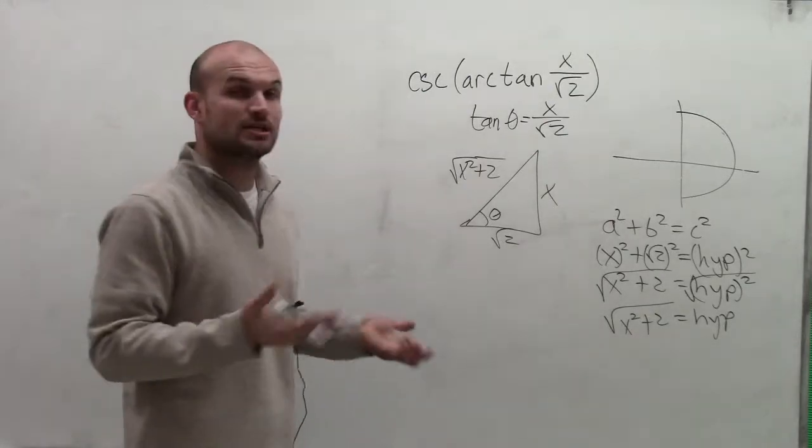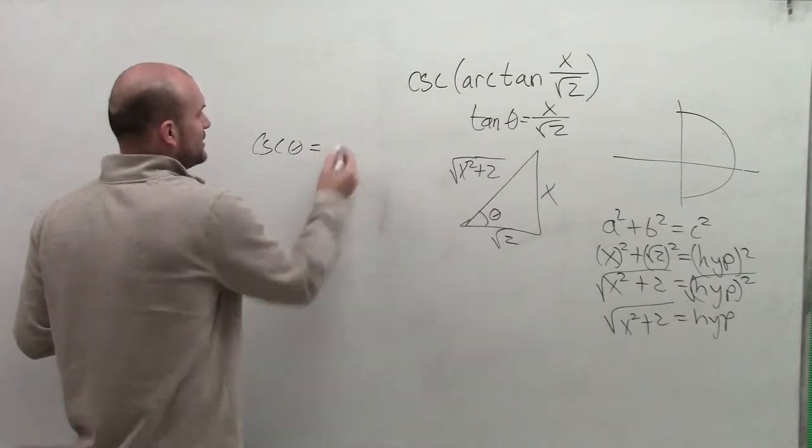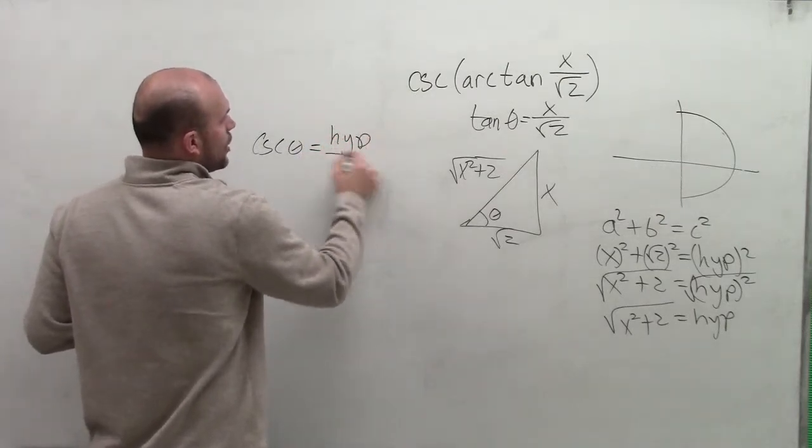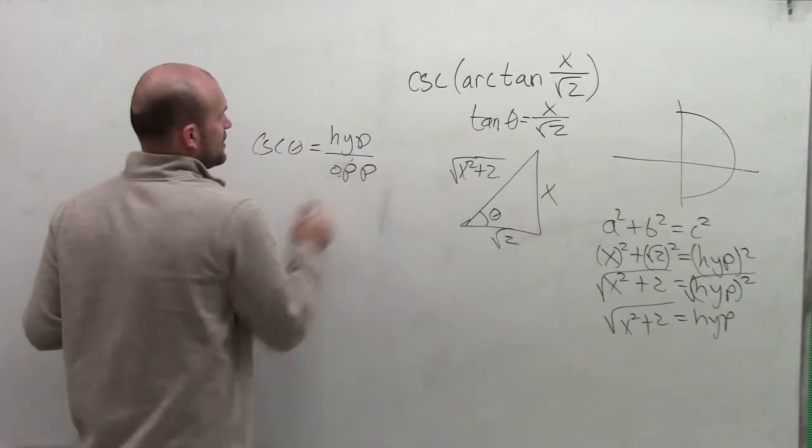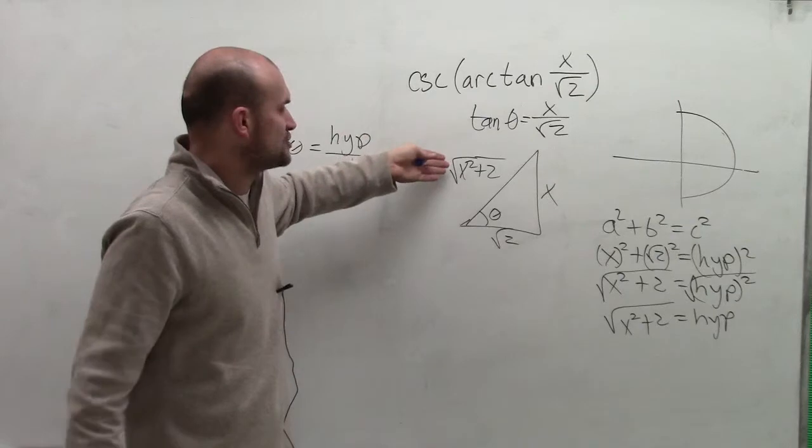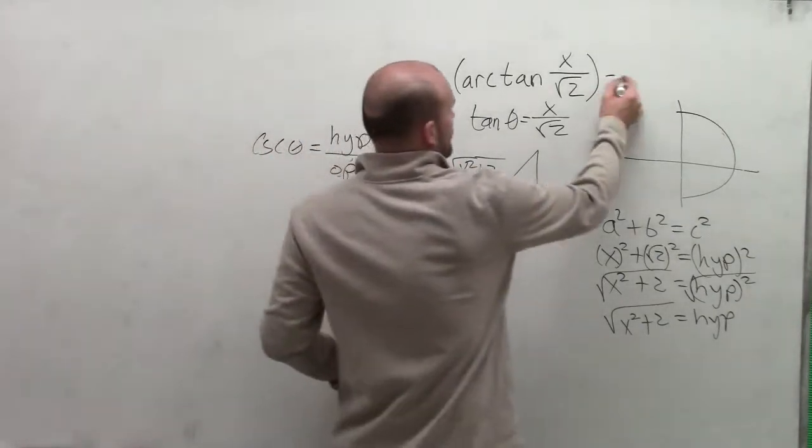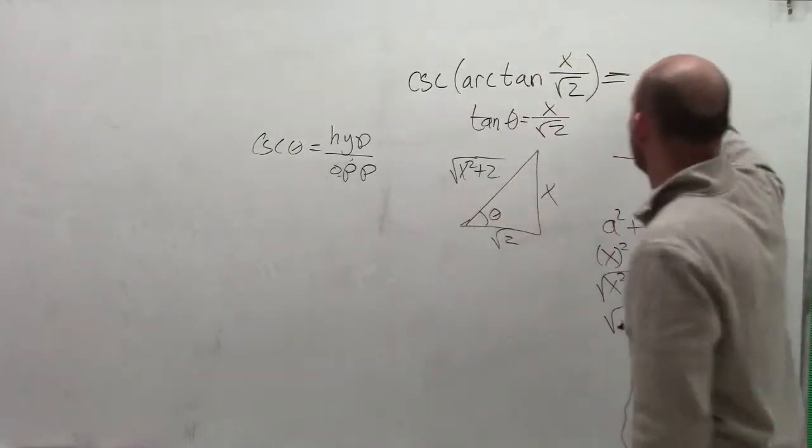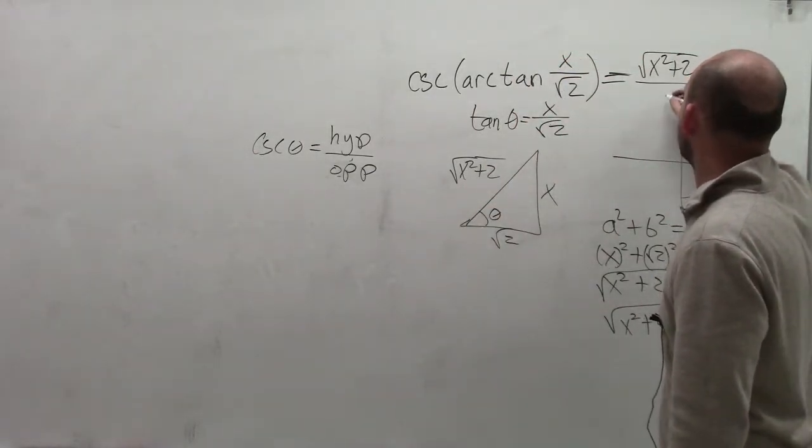Now I need to determine what is the cosecant. So the cosecant, remember of theta, is going to equal your hypotenuse over your opposite. So therefore, in this problem, you can see that my hypotenuse is square root of x squared plus 2. And my opposite side is x. So therefore, by evaluating this function, I have the square root of x squared plus 2 divided by x.